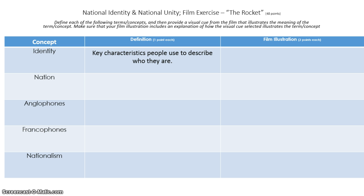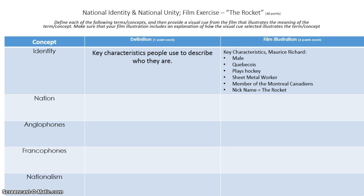If you use the main character in the film — The Rocket himself — you will find that he has key characteristics that make him unique. For example, he is male, he is Québécois, and he speaks French. He plays and likes hockey. Initially, part of his occupation was that of a sheet metal worker, but he became a member of the Montreal Canadiens and in fact their greatest player, with the nickname The Rocket. Each of these key characteristics are elements that are important in shaping The Rocket's identity.